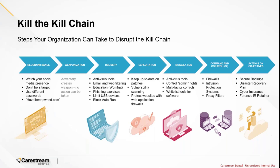In the unfortunate event that the threat actor is actually able to perform actions on objectives and reach the seventh stage, there are key things you must have in place. First, make sure you have good, secure backups that are available so you can quickly restore your environment. These backups should be maintained on a separate network or stored off-site, as threat actors in ransomware attacks typically target backup systems first.